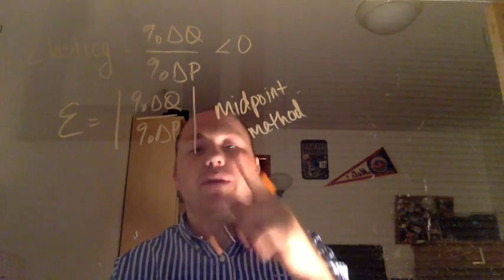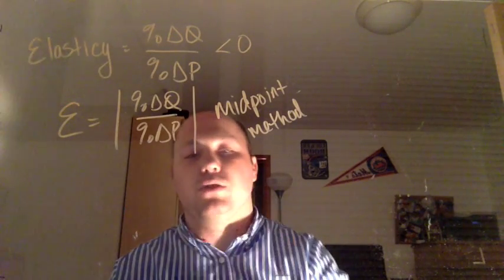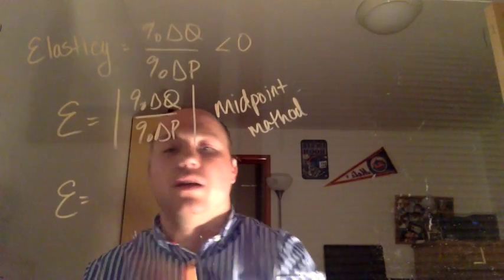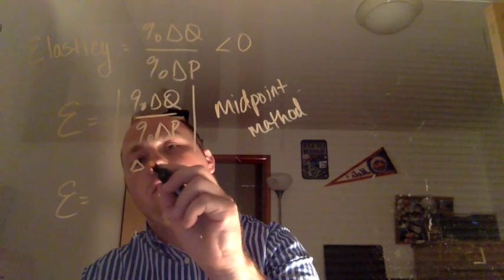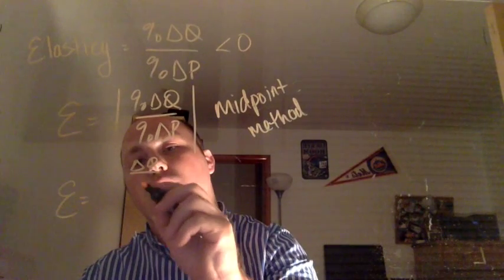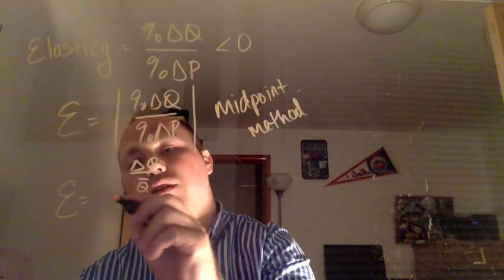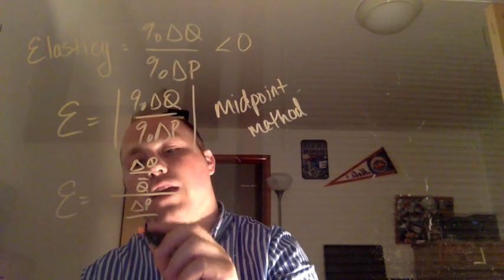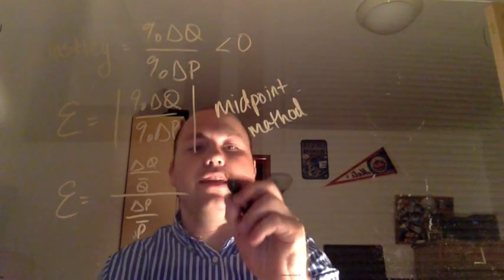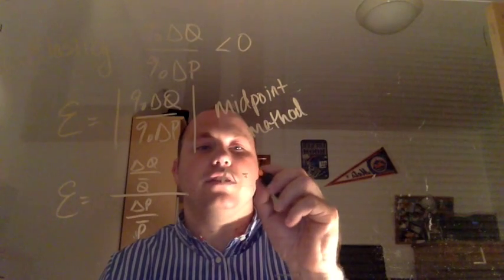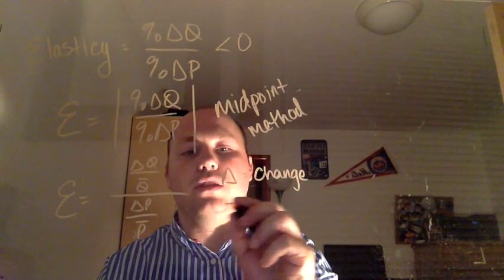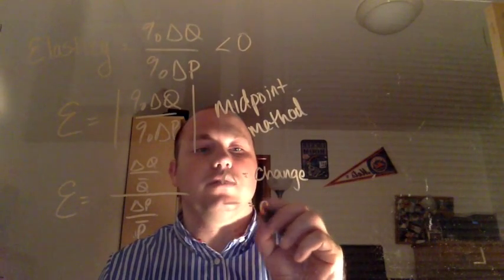But what you can do is the midpoint method, what it does is it takes the average percentage change over that region. So this same formula now becomes the change in quantity over the average quantity divided by the change in price over the average price. And here I'm using the delta, the Greek letter delta to mean change, or the difference.